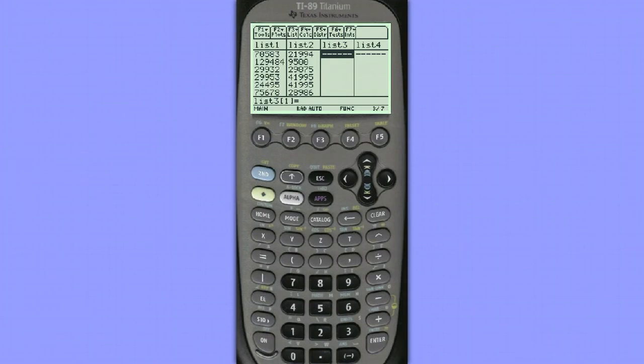We'll continue to work with the data from the previous example. That data was for the used Ford F-150 SuperCrew 4x4 trucks. In list 1 we had the miles driven and in list 2 we had the price.